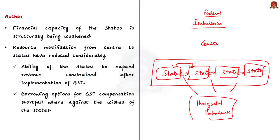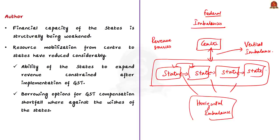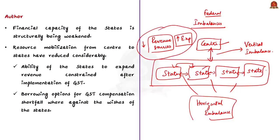Vertical imbalance occurs because every year the expenditure obligations of state governments increase, but there is improper alignment of revenue sources — growing expenditure requirements on one hand, and poor yield of revenue sources for states on the other. So intergovernmental transfers — revenue transfers from the central government to the state governments — are an inherent part of a multi-level fiscal system. The author begins the editorial by stating that the financial capacity of states is structurally being weakened because resource mobilization from the central government to state governments has reduced considerably.